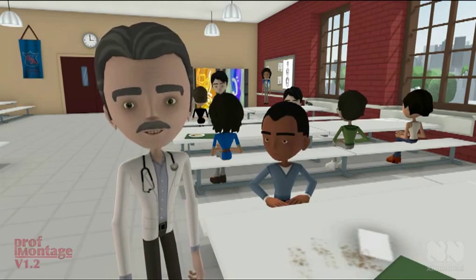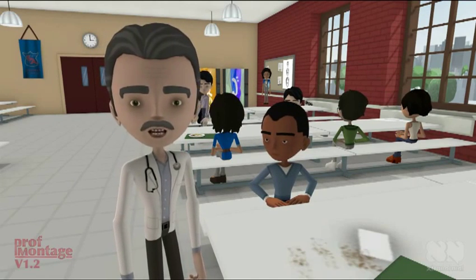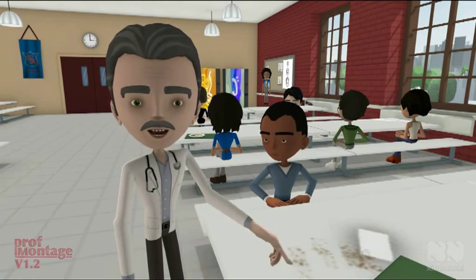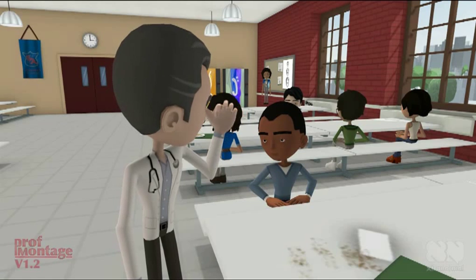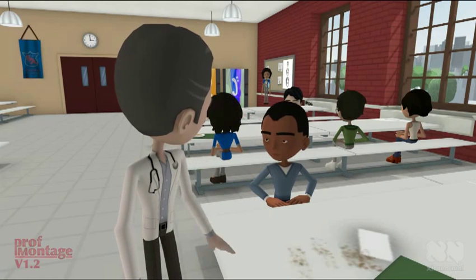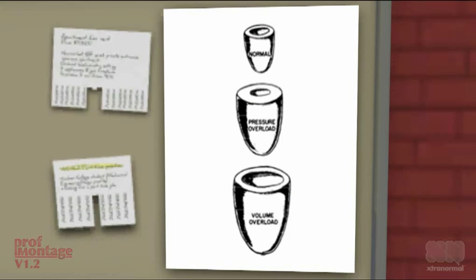Eccentric hypertrophy follows a volume load such as chronic aortic or mitral valve incompetence. Myocytes enlarge in series. The wall thickness doesn't change much but the LV cavity enlarges.